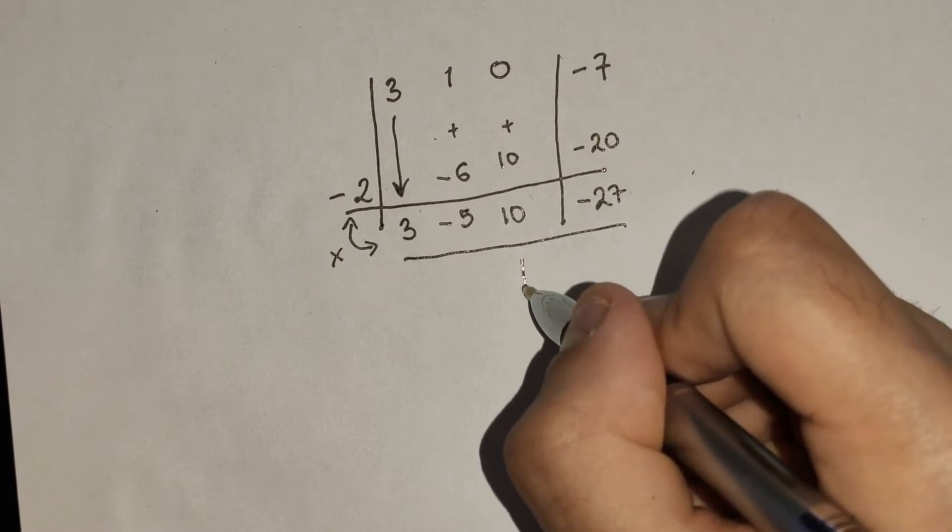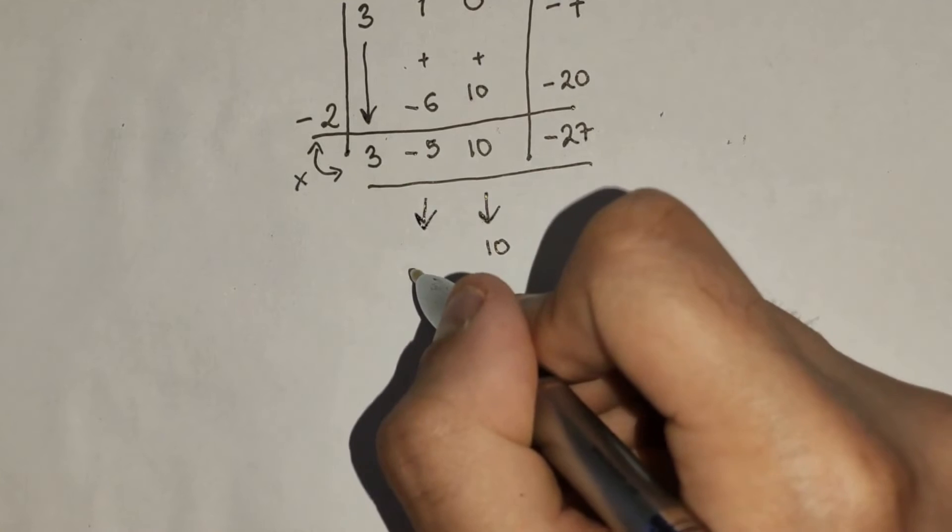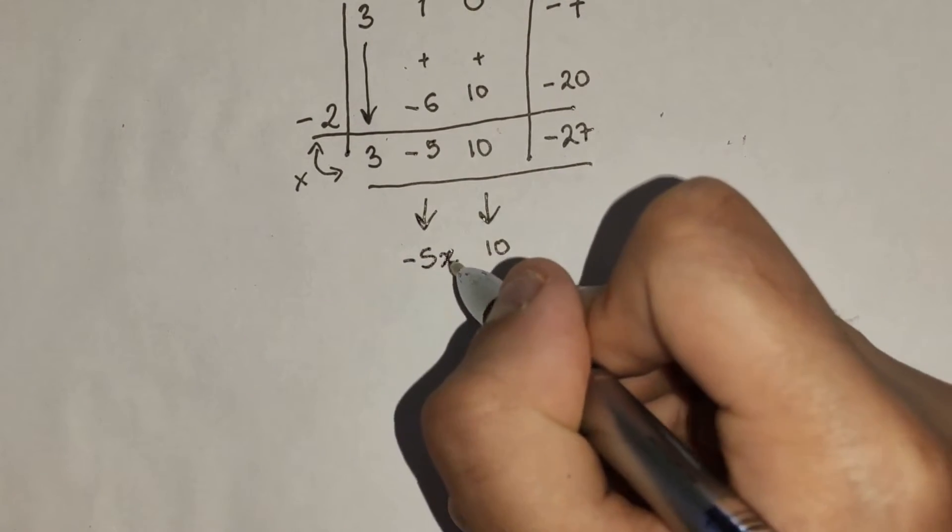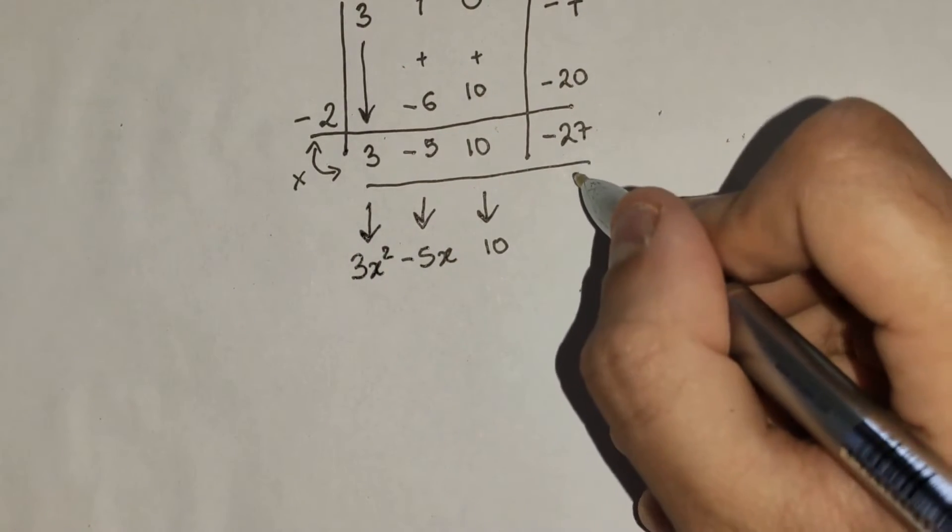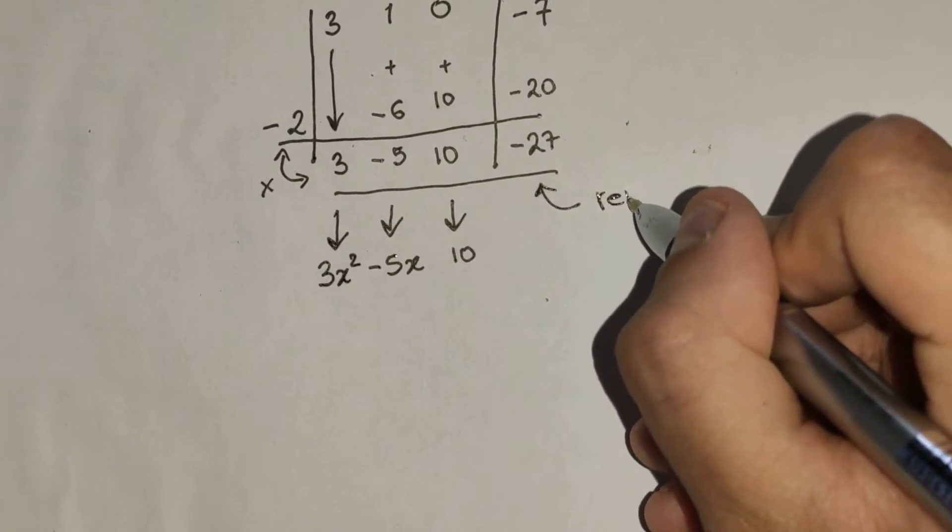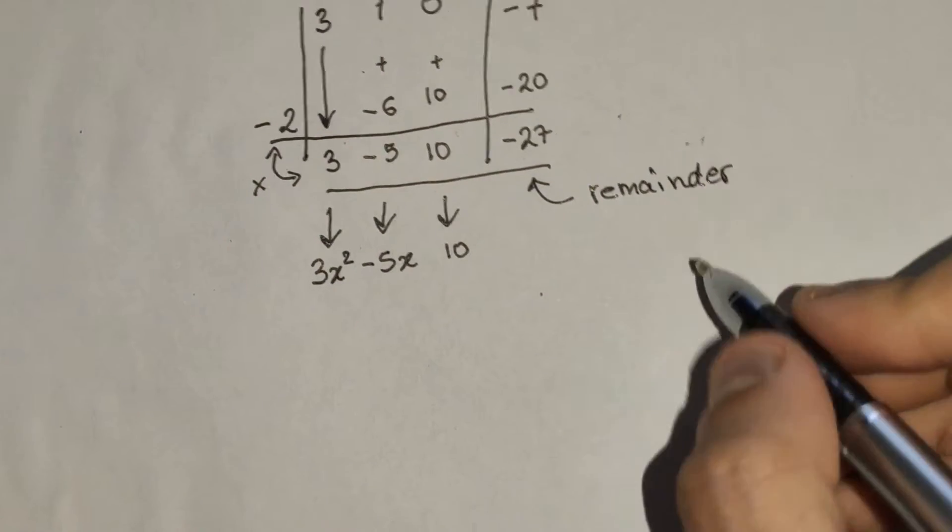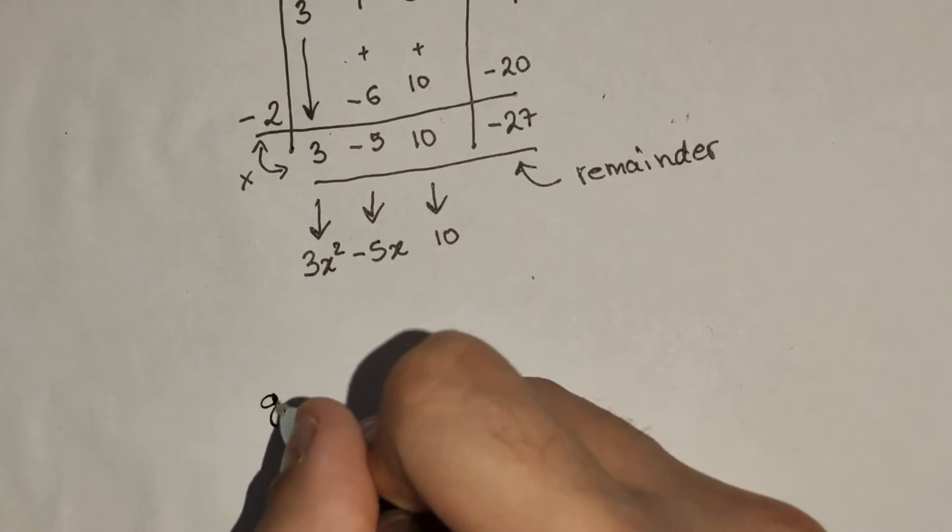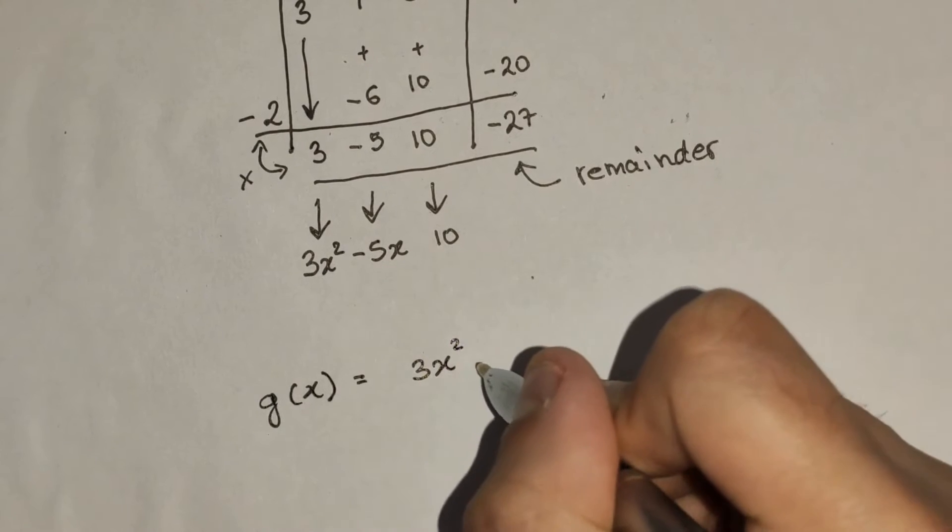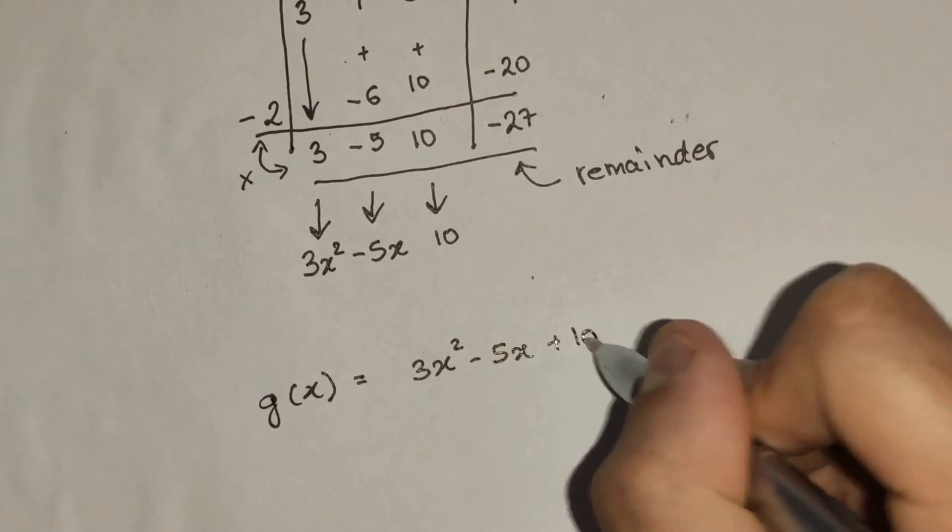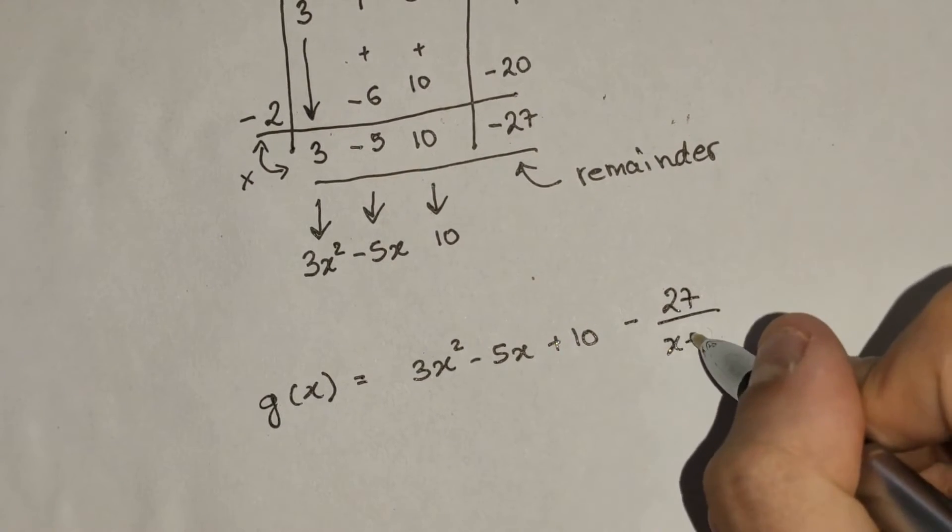Now, each coefficient will then turn into a new coefficient, which is now 10. This will become minus 5x, and this will become 3x squared. Now, what is this? This is the remainder. Now, the remainder has not been divided by the coefficient, and therefore g of x is therefore equal to 3x squared minus 5x plus 10 minus 27 over x plus 2.